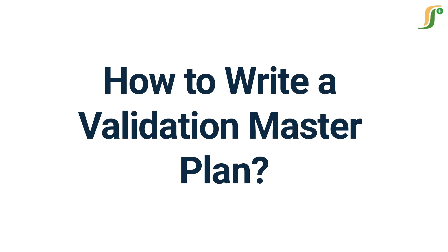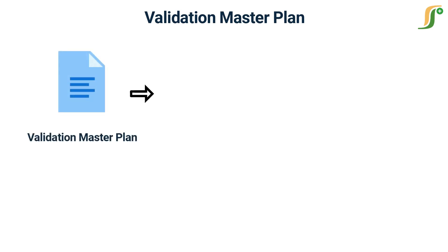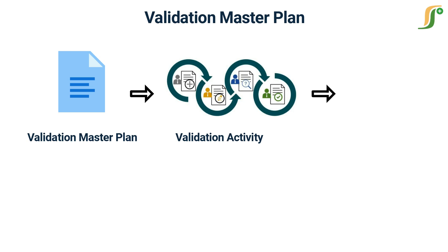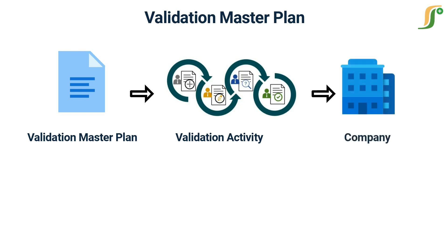Hi friends, welcome to a new learning video on pharma guideline. In this video we will discuss how to write a validation master plan. A validation master plan (VMP) is a crucial document in the pharmaceutical industry that outlines the strategy and approach for validation activities within a facility. It serves as a roadmap for ensuring that all processes, systems, and equipment meet regulatory requirements and maintain the integrity and quality of pharmaceutical products. This video will provide a step-by-step guide on how to write a VMP, covering the key components and considerations.